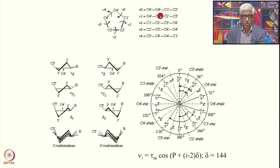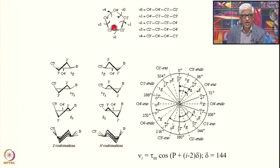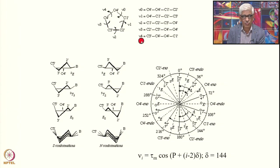It is the angle between these two planes that defines the dihedral angle, or the torsion angle around this bond. Likewise, nu1 is O4', C1', C2', C3'; nu2 is C1', C2', C3', C4'; nu3 is C2', C3', C4', O4'; and nu4 is C3', C4', O4', C1'.